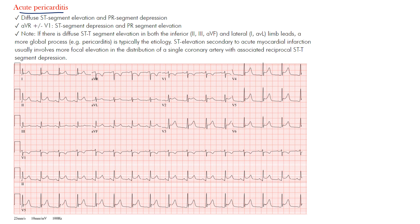In this EKG you can see that the ST segments are elevated — this one here is slightly elevated in V2, V3, V4, V5, and V6. So essentially diffuse, meaning widespread ST elevation in the majority of leads — not so much in lead three here, but you can often see it in that one as well.